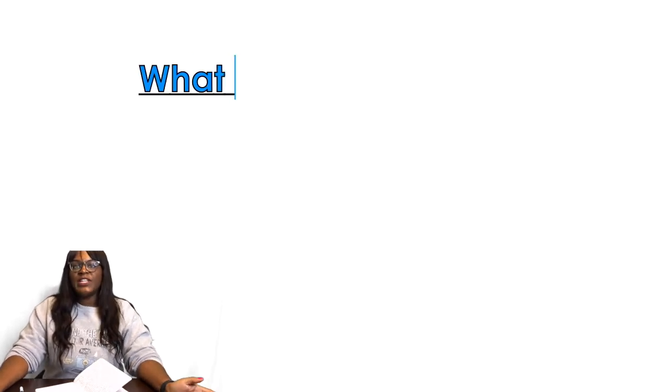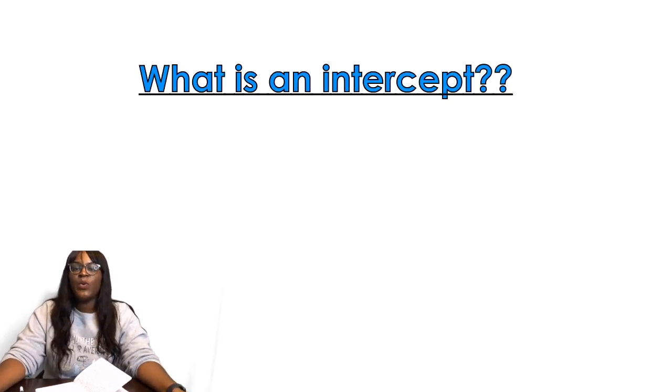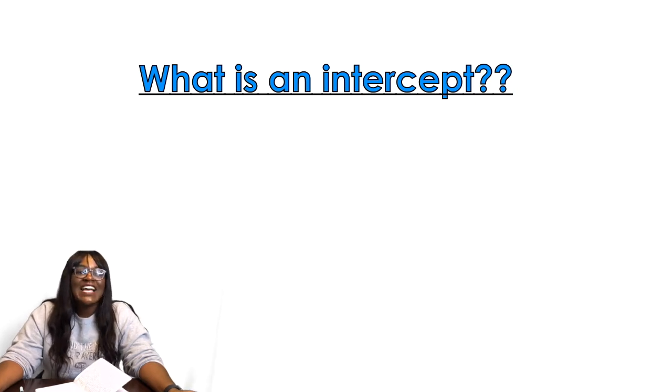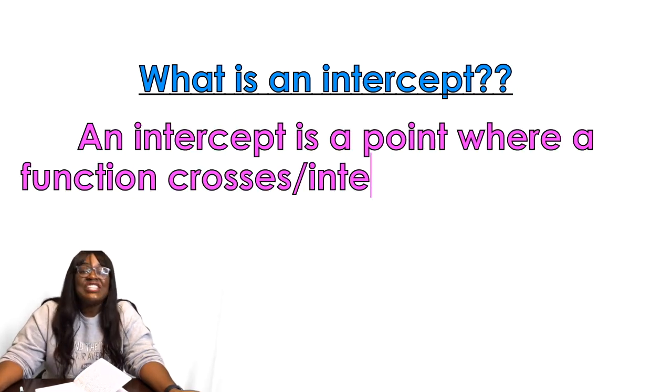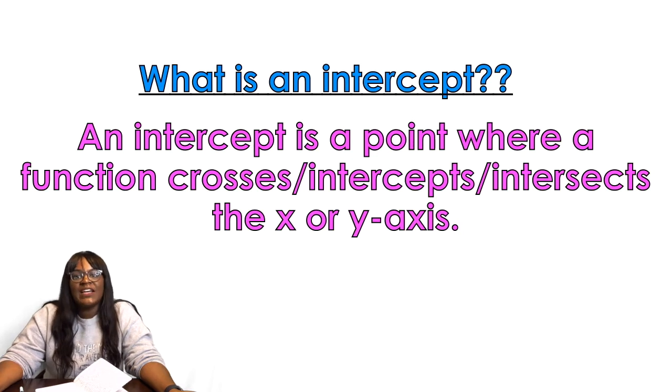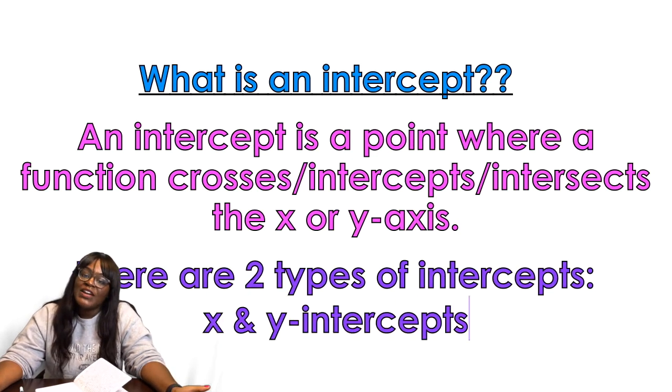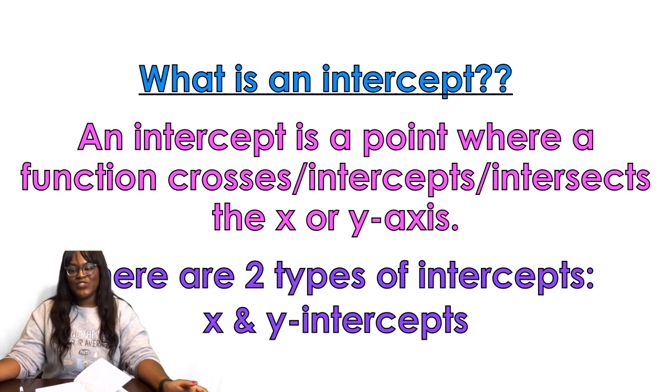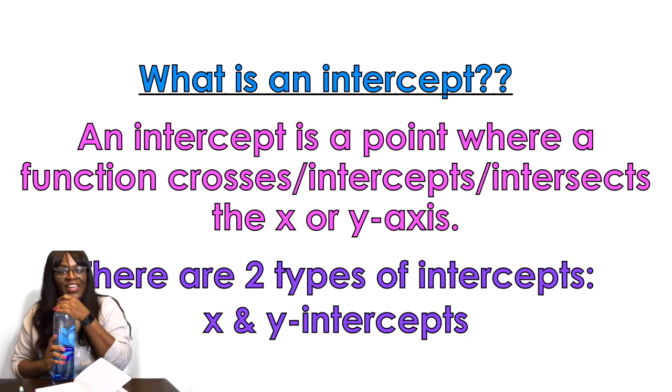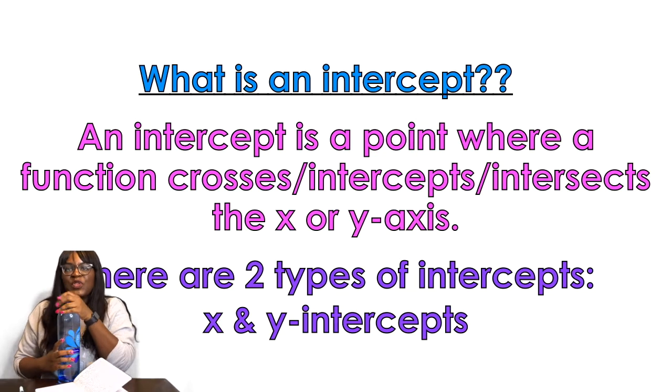All right, so what is an intercept? An intercept is a point where a function crosses, intercepts, or intersects the x or y axis. There are two types of intercepts: either an x-intercept or a y-intercept, which makes sense because those are the two axes that we deal with in this level of math.